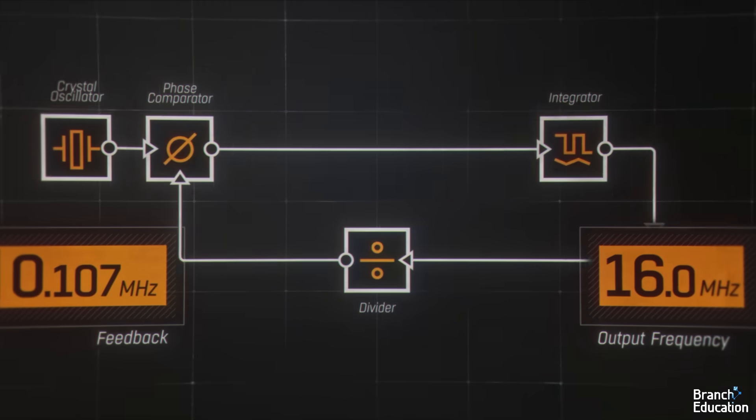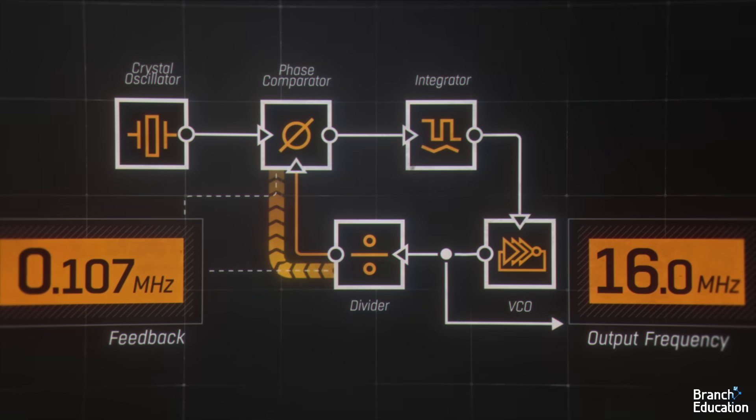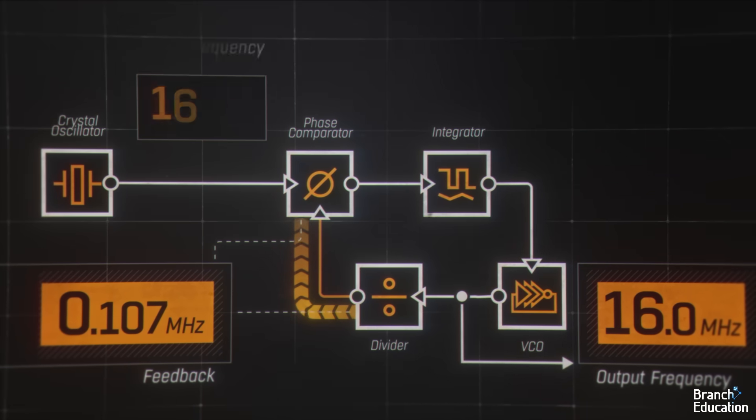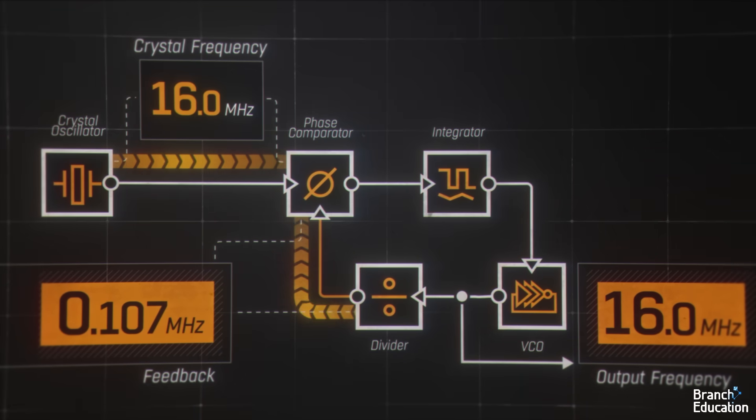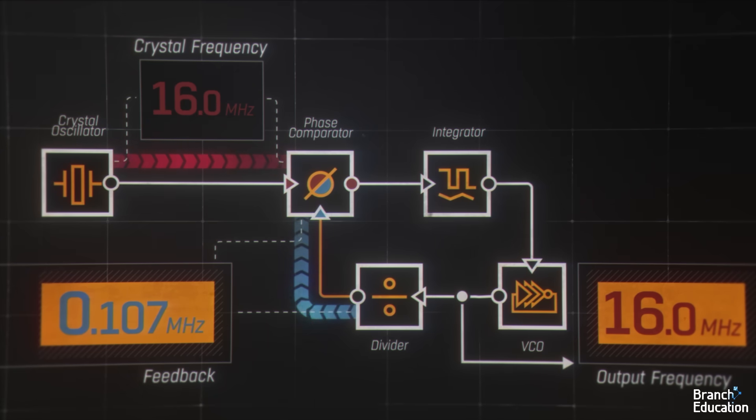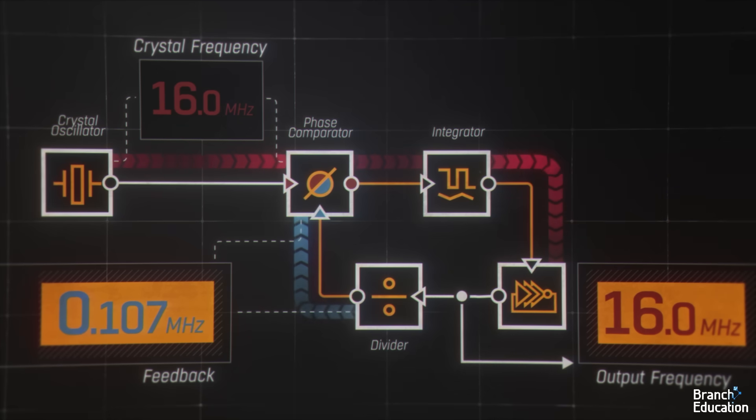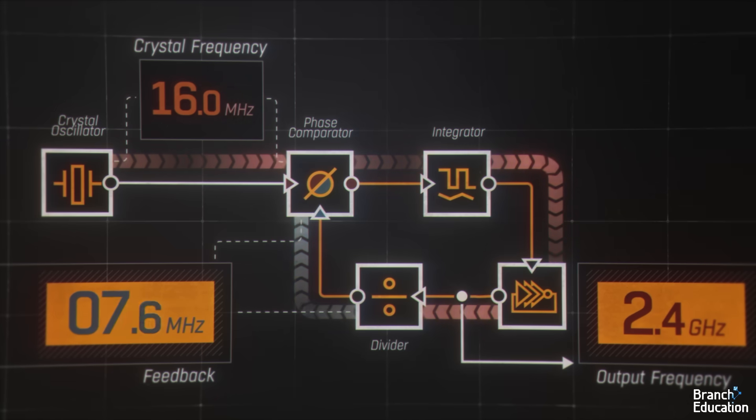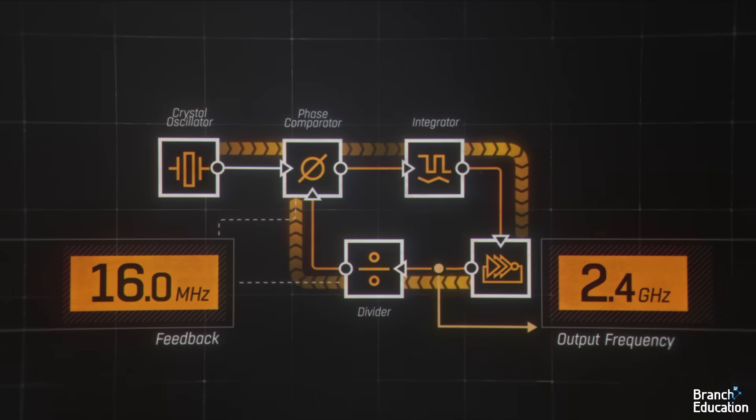Next, the signal is sent to the frequency and phase comparator, which wants the two signals to be identical. However, by having them different, it outputs a signal which goes through the integrator, turning it into a steady voltage and driving the voltage controlled oscillator up to a higher frequency, which will be exactly 150 times that of the 16 megahertz crystal, which is 2.4 gigahertz.